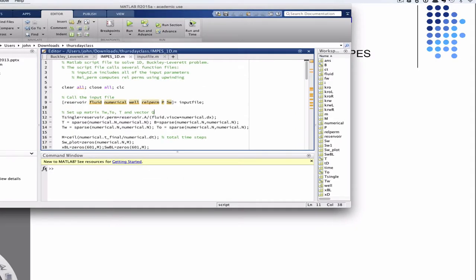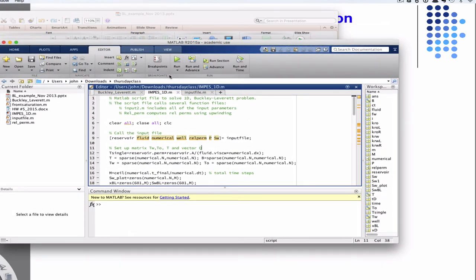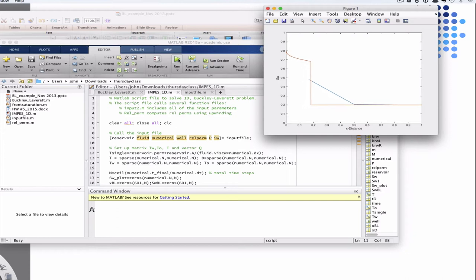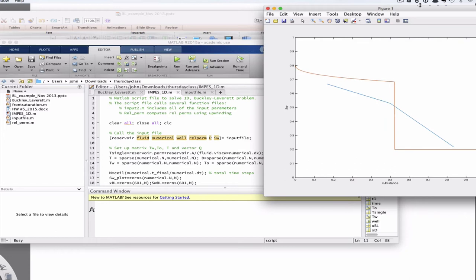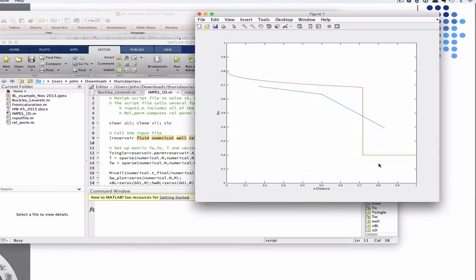So if we go over here to MATLAB, we can actually solve that exact problem with three grid blocks. The orange-ish line is the actual semi-analytic solution, Buckley-Leverett, and the blue line is the three blocks. The saturations are computed at the block centers, so the line there just connects those guys.